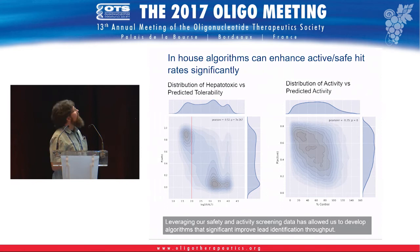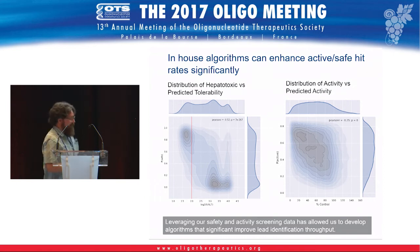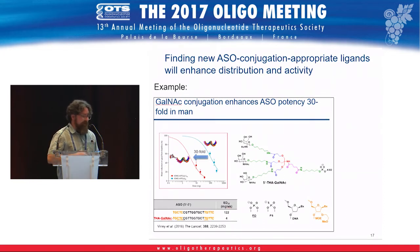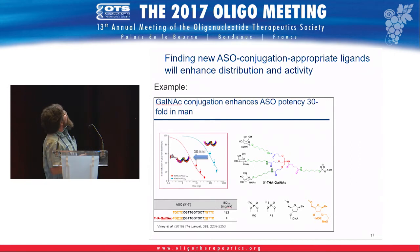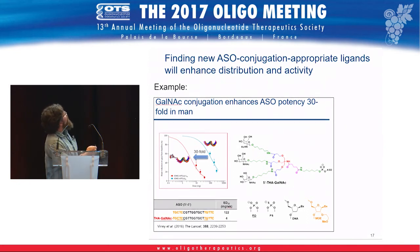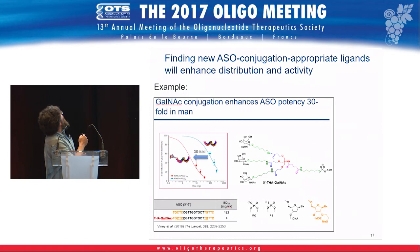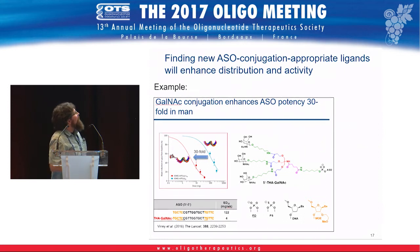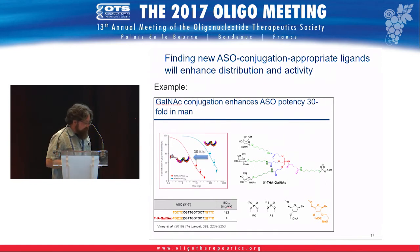Once you have the oligo, you can put ligand conjugates on them that drive the oligos into particular places. For example, we've published on the GalNAc approach, which works for both ASOs and siRNAs — the GalNAc binds the GalNAc receptor, highly expressed on hepatocytes, and increases activity up to 30-fold in the clinic, hugely beneficial in terms of lowering the therapeutic dose.